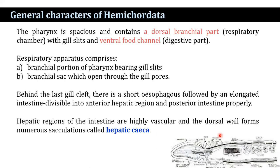The pharynx contains a respiratory chamber known as the dorsal branchial portion, and a digestive part that is the ventral food channel. The branchial part is supported with numerous gill slits.